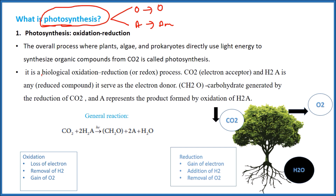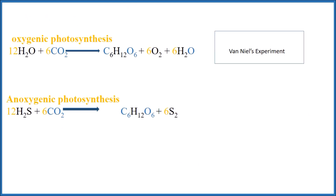If we write the equation of Photosynthesis, we can say that water plus carbon dioxide, in the presence of sunlight and chlorophyll, will make glucose and involve oxygen in the environment. This whole process is called Photosynthesis, and it is called Oxygenic because there is an involvement of oxygen.